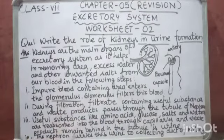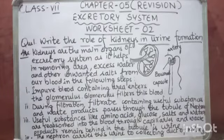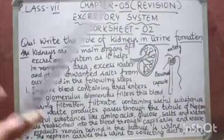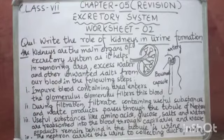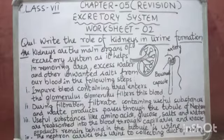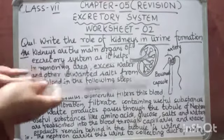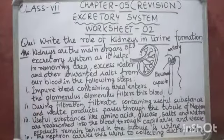Now, the nephron carries this urine to the collecting duct of the kidney. The kidney has a collecting duct where urine is collected. And then, from the collecting duct, it goes to the ureter. Then through the ureter, it goes to the urinary bladder. And from the urinary bladder, it is passed out of the body through the urethra. This is how urine is formed in the kidney and passed out through the ureter, urinary bladder, and urethra.